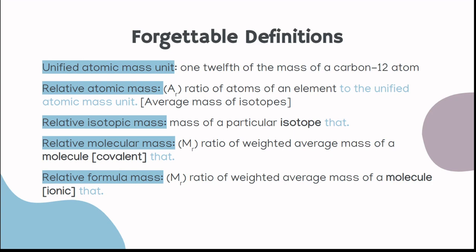We have the relative isotopic mass, which is a mass of a particular isotope. So if I have carbon-14, it's going to be 14. If I have carbon-12, it's going to be 12. And this is, yet again, compared to the AMU, the unified atomic mass unit. And then we have relative molecular mass, which is the ratio weighted average mass of a molecule, which is covalent. So pretty much if it's H2O, it's going to be 18 because it's the oxygen, which is 16, plus the two hydrogens, which is 18 overall compared to the atomic mass unit.